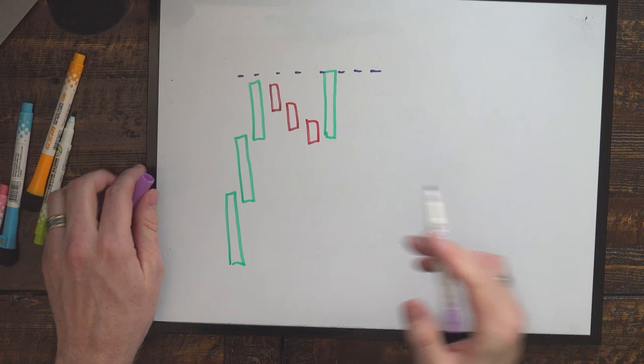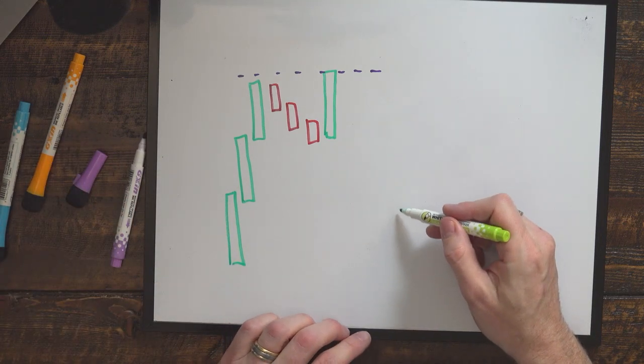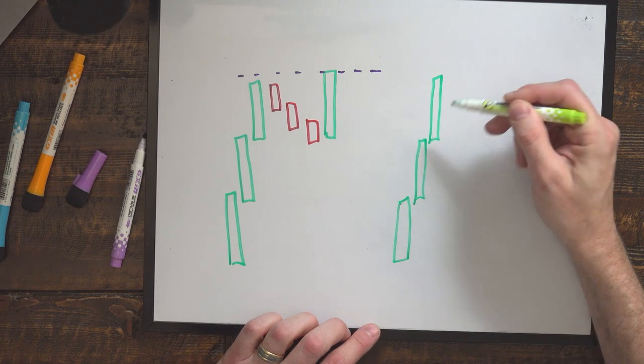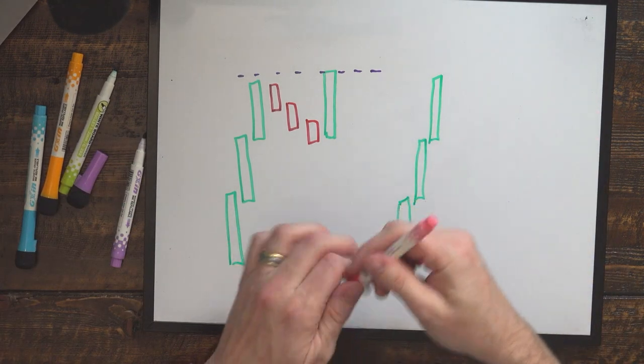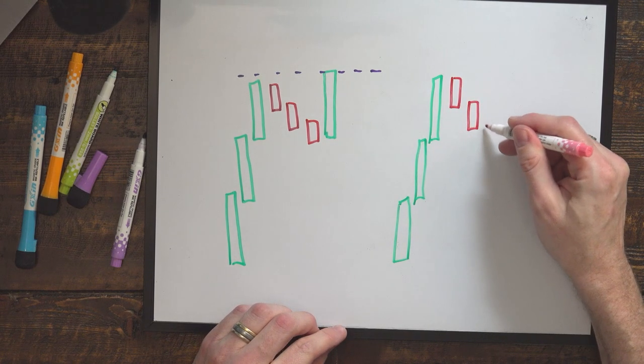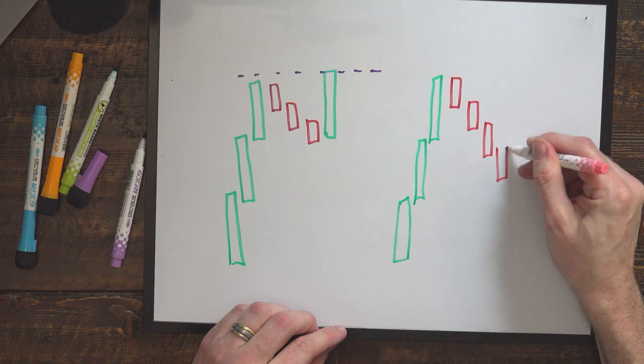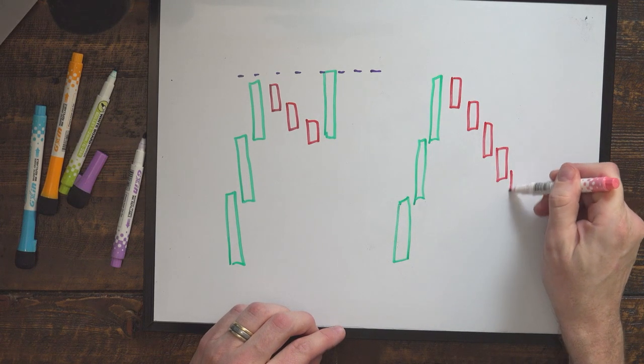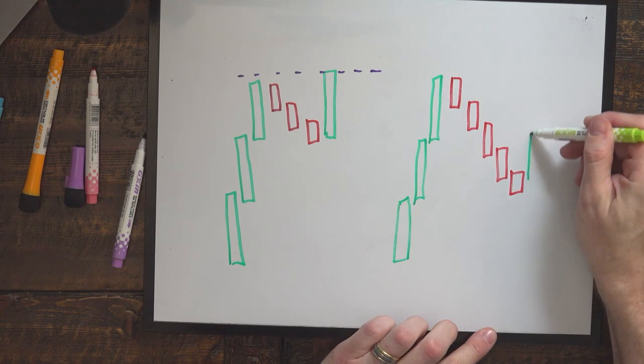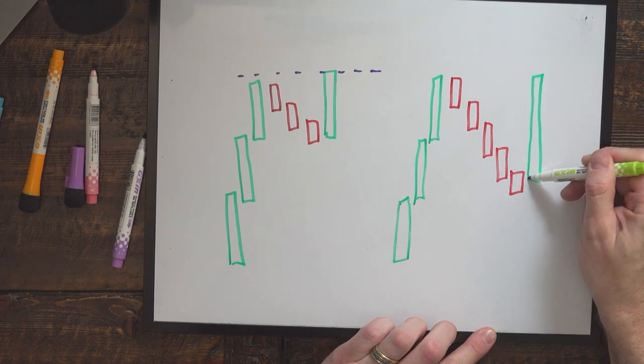Sometimes a more extreme version of the cup and handle formation will be when a stock breaks one of the rules of the bull flag pattern. One of the rules, if you recall the episode on how to trade bull flags, is when a bull flag retraces more than 50% of the move up. So sometimes this happens where it sells off, and then all of a sudden, it comes right back up to the high like this.